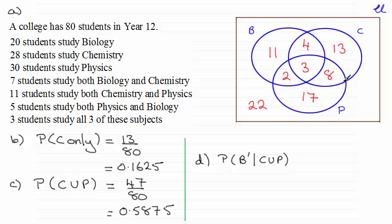And that totals 47 students if you add up the 4, 13, 3, 8, 2 and 17. So out of those 47 students, how many don't do biology?